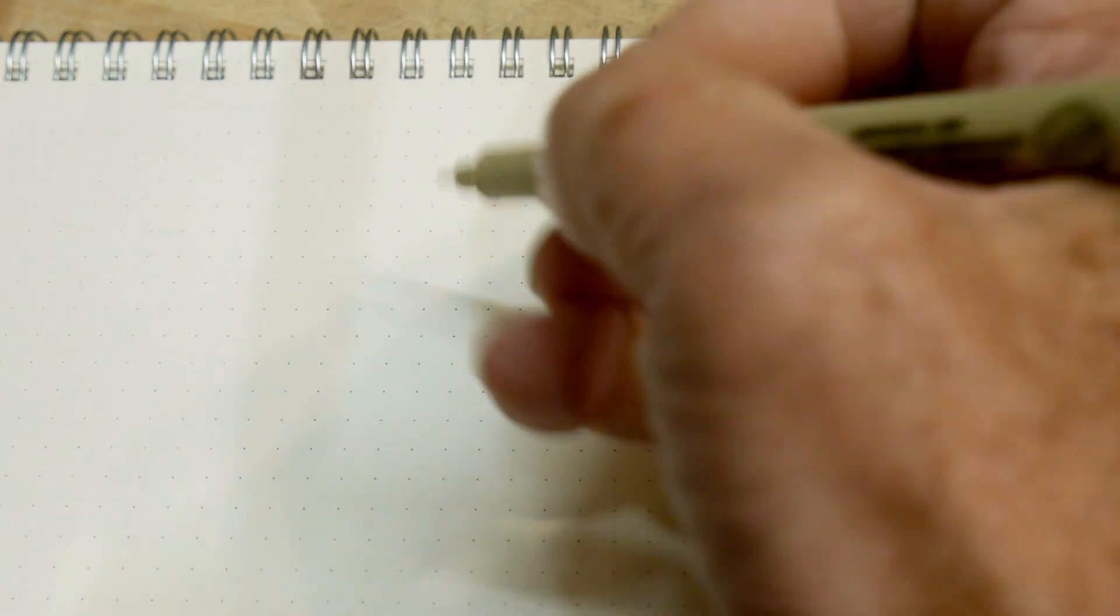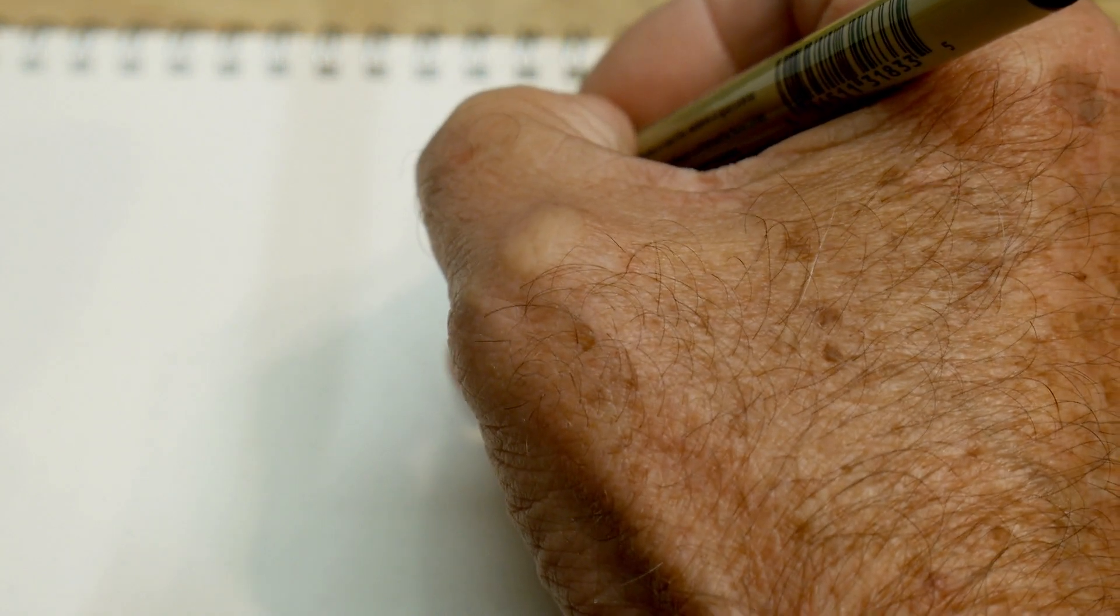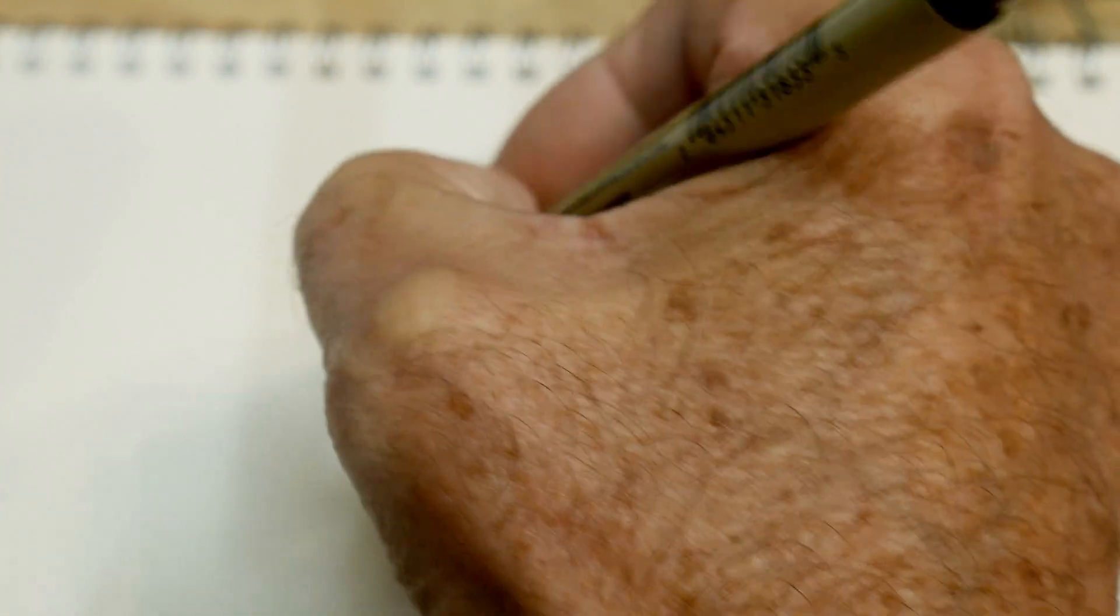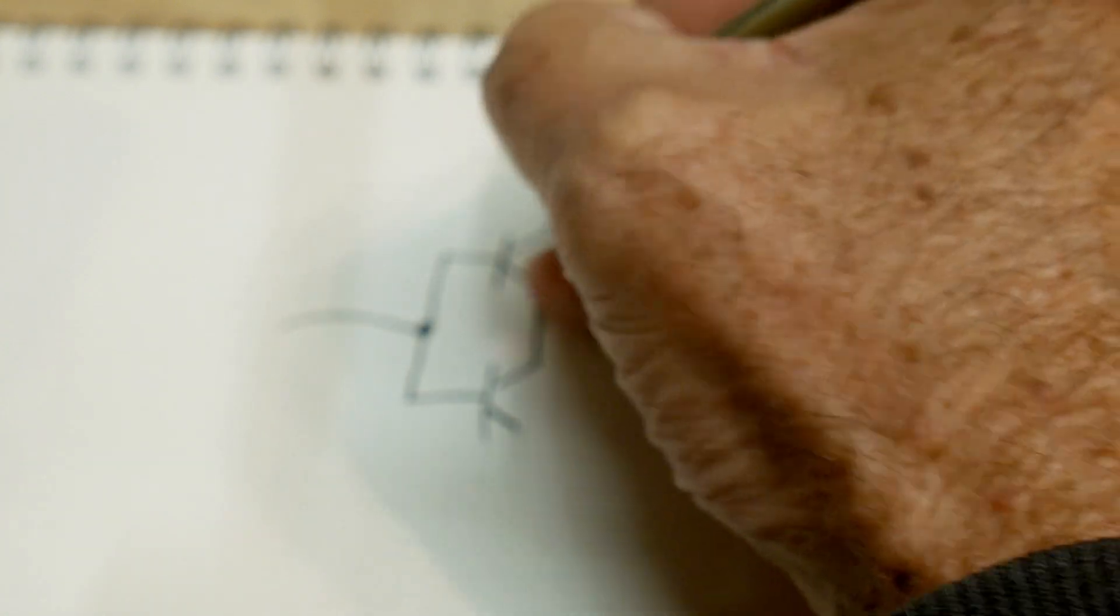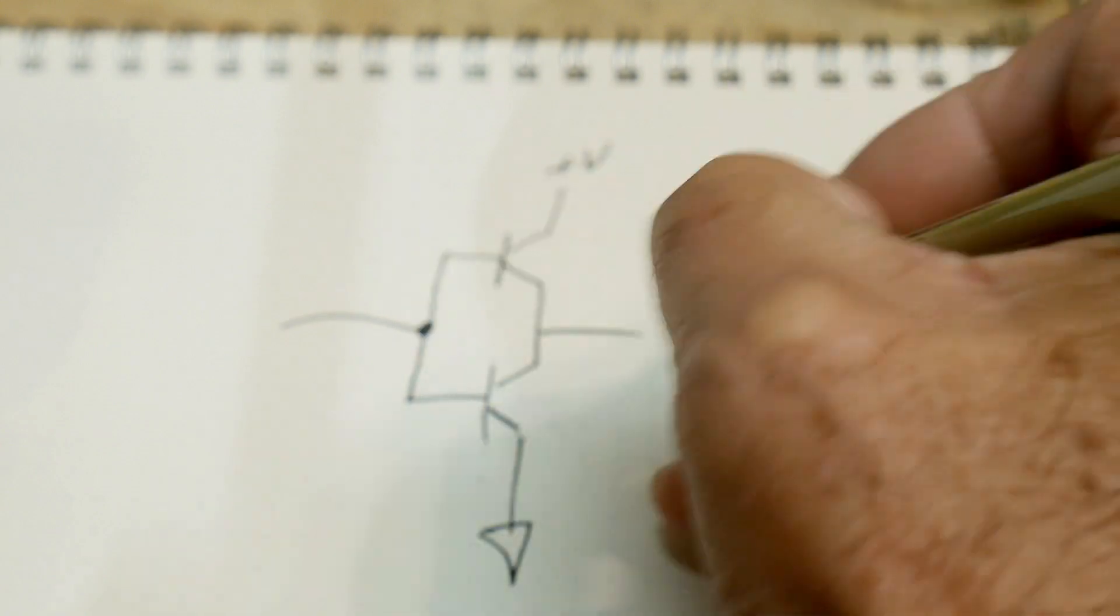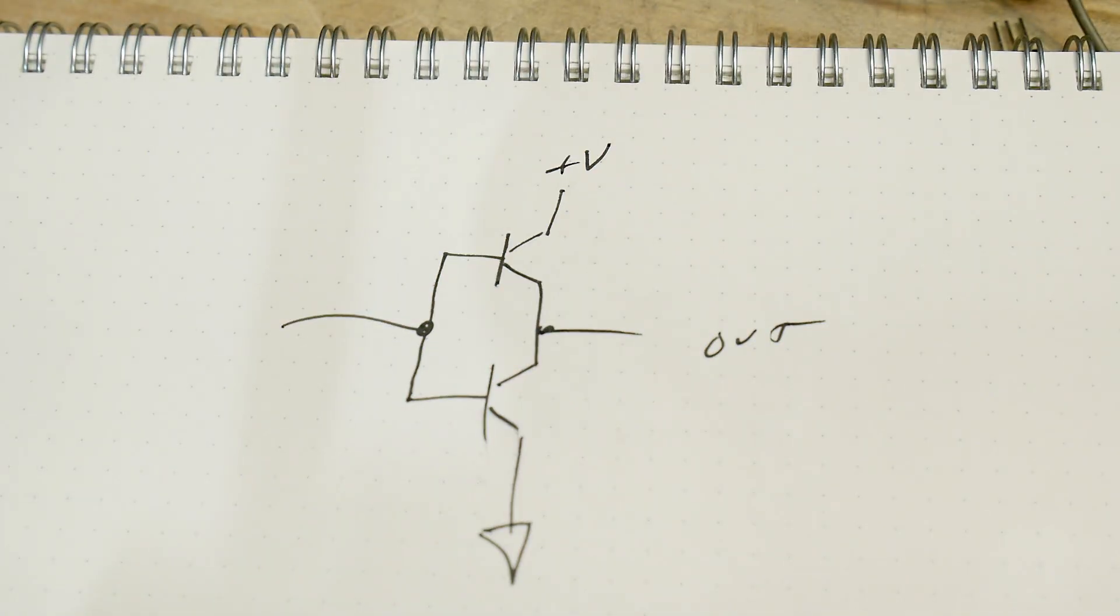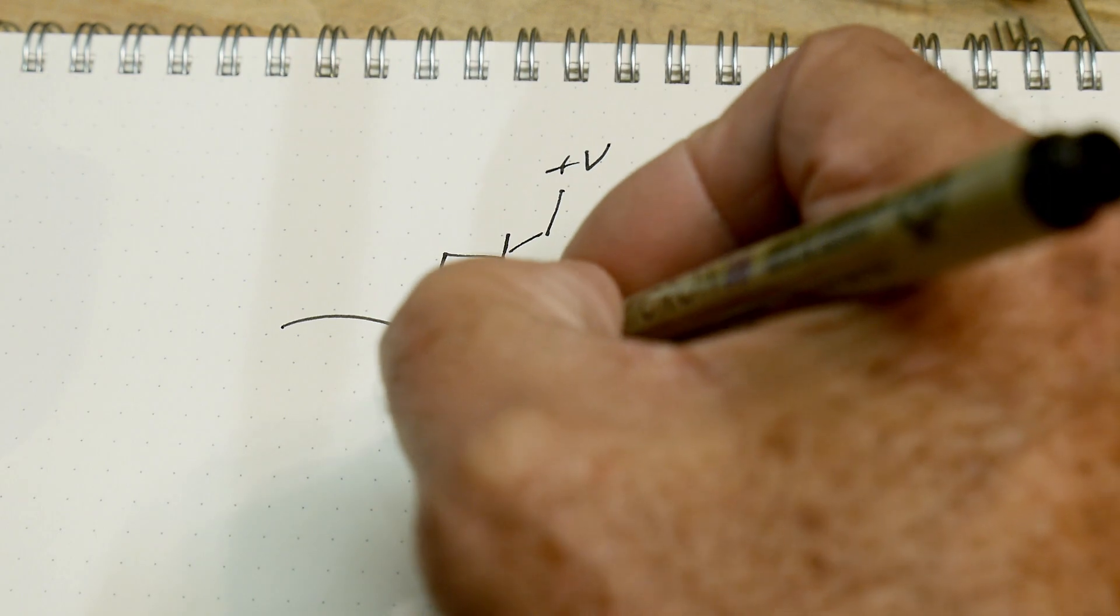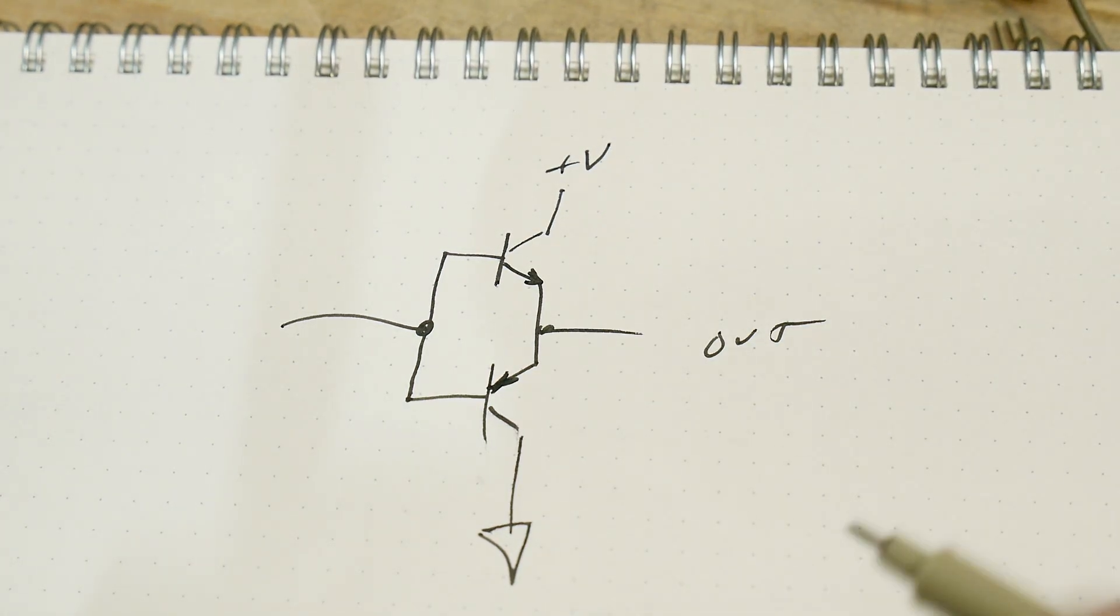In a normal situation you might want a push-pull output, something beefy. You might have a system where you have two transistors - this is plus V and this is ground and this is out. Very common. This would have to be an NPN and this would have to be a PNP. Very common circuit and away you go.